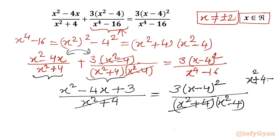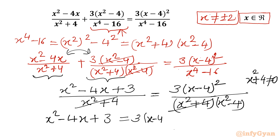For real solutions, x cannot equal ±2. Now on the left hand side we have only x² - 4x + 3, and on the right hand side we have 3(x - 4)² divided by (x² - 4). So let us cross multiply: (x² - 4x + 3)(x² - 4) equals 3(x - 4)².